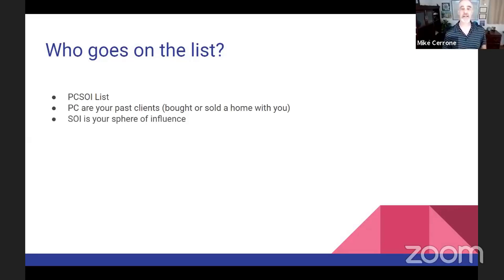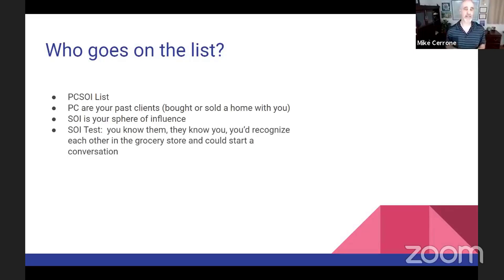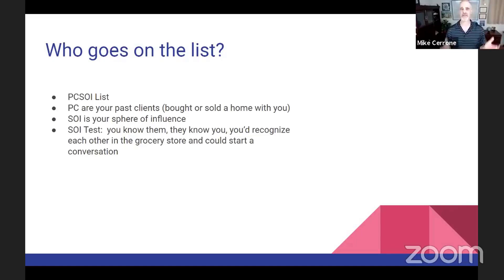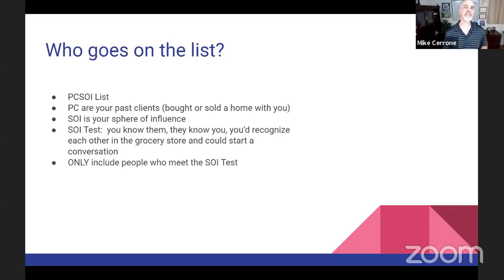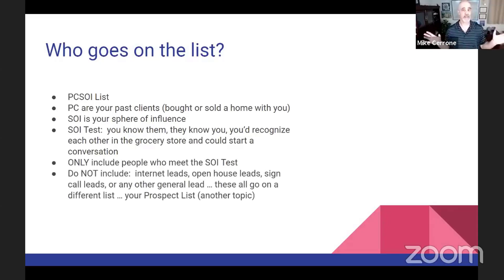Next is your SOI — your sphere of influence. Use the SOI test: you know them, they know you, you'd recognize each other in the grocery store and could strike up a conversation. If those four things are true, they pass the SOI test and can be part of this list. This is a very special, qualified list — your goldmine for repeating referrals. Do not include random leads, internet leads, open house leads, sign call leads, or any other general leads. Those go on your prospect list. Today we're talking about repeating referrals from your PCSOI.